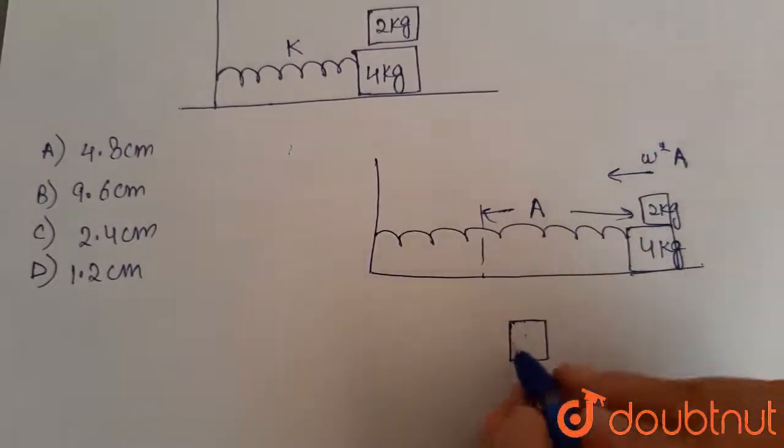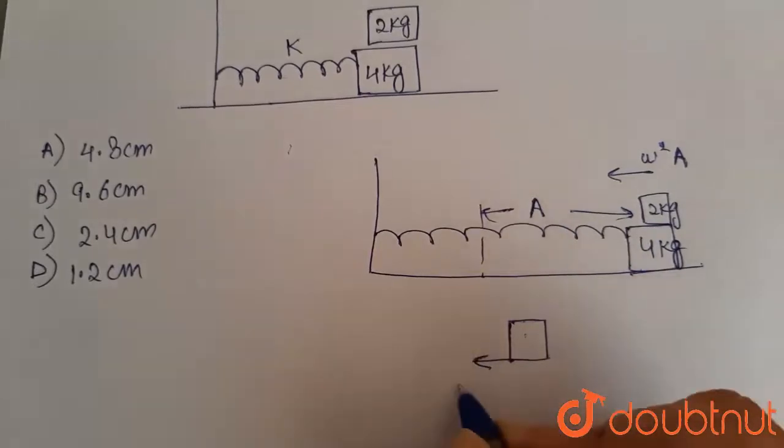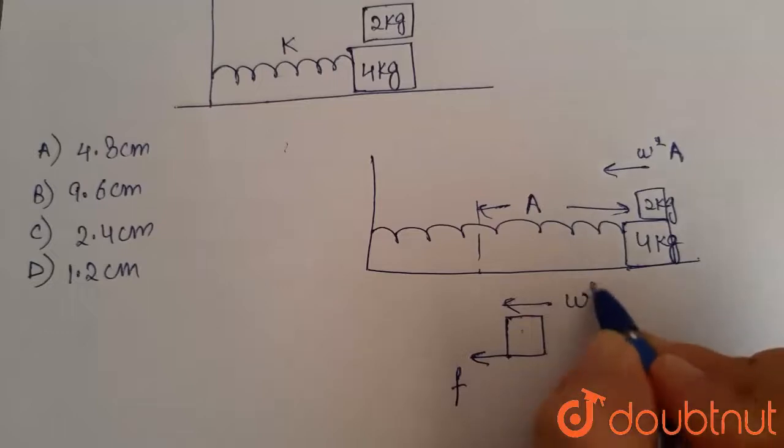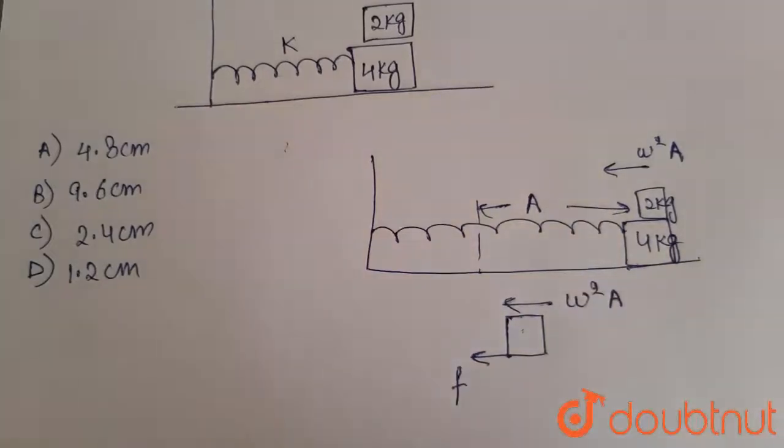there is only one force acting on this 2 kg object. So this friction will be in the forward direction, which will provide an acceleration of omega square into A, towards left.